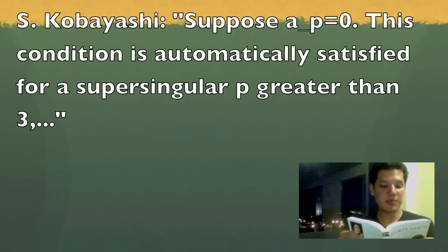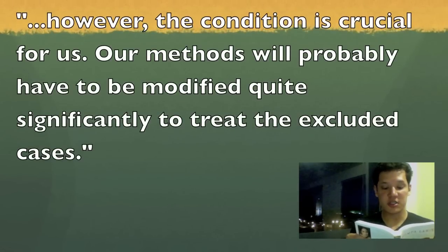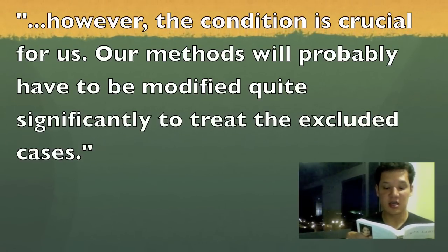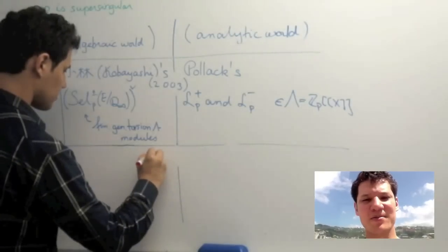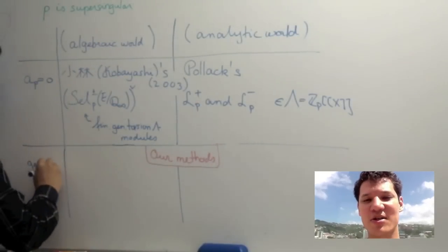So what about the general supersingular case? In regards to that, Kobayashi writes in his Inventiones paper, suppose AP is equal to 0. This condition is automatically satisfied for a supersingular P greater than 3. However, the condition is crucial for us. Our methods will probably have to be modified quite significantly to treat the excluded cases. In our paper, we overcome these difficulties and treat the general supersingular case, including the case AP not equal to 0.